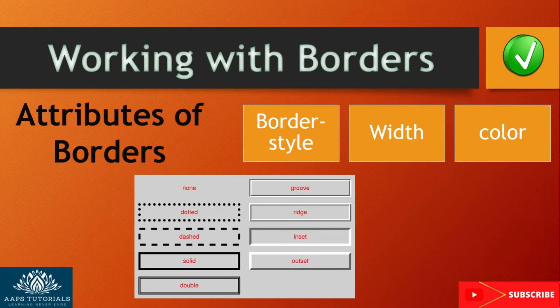Border color: the coloring properties set the color of the four borders by defining the border value. This includes border color name, RGB value, HEX value, HSL value, or transparent. With CSS, we can style individual side borders with different colors.